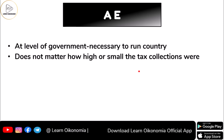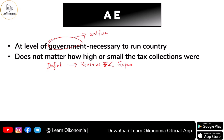Now coming to the government level — as far as a government is concerned, we know that a government is basically there to ensure the welfare of its people. And mostly the government would be running a deficit budget, where revenue falls short relative to expenditure. That means expenditure would be more than the revenue of the government, and the government would go for borrowing.